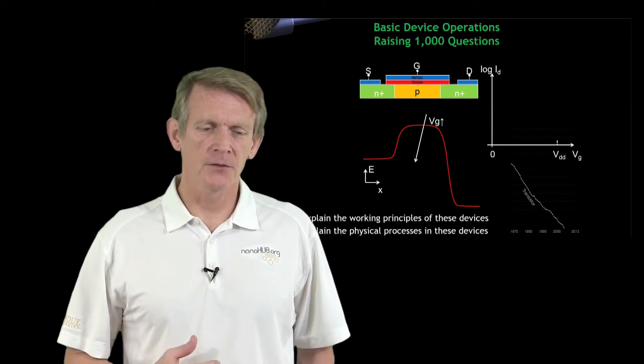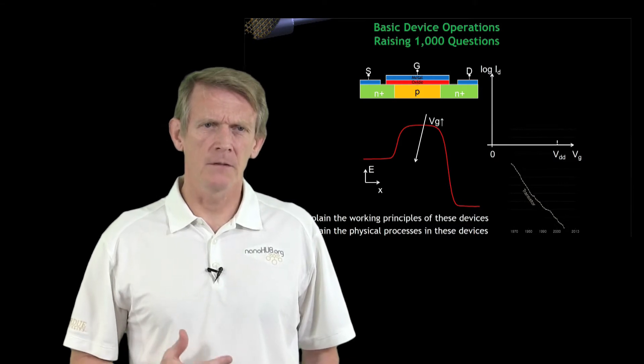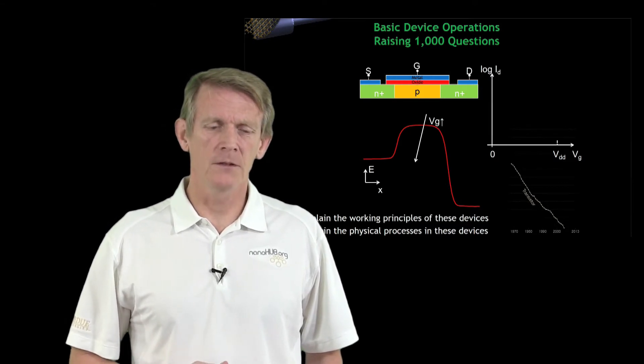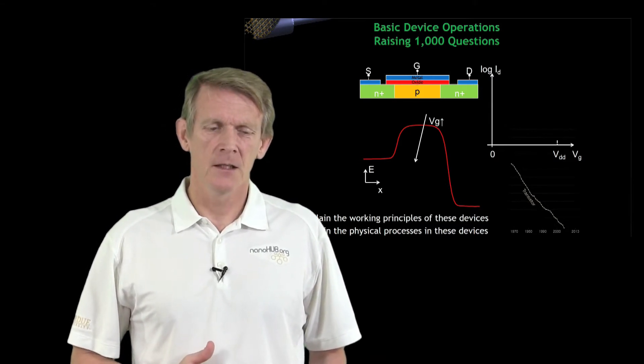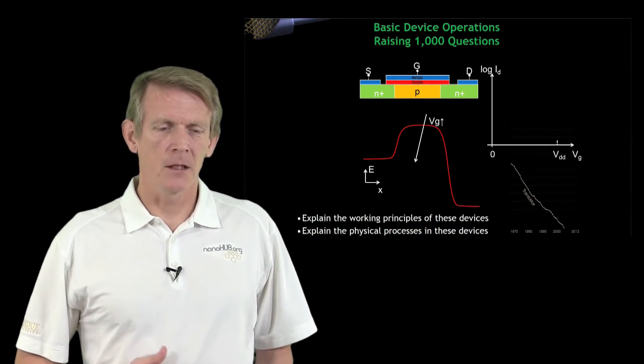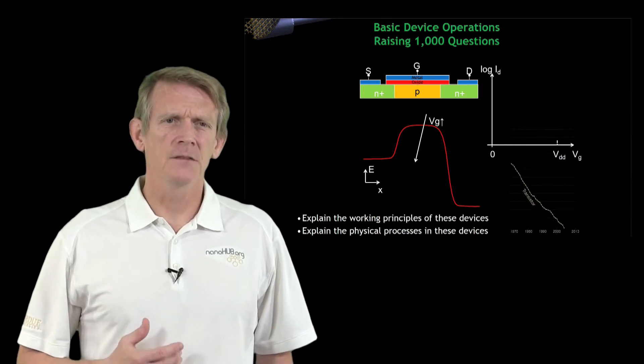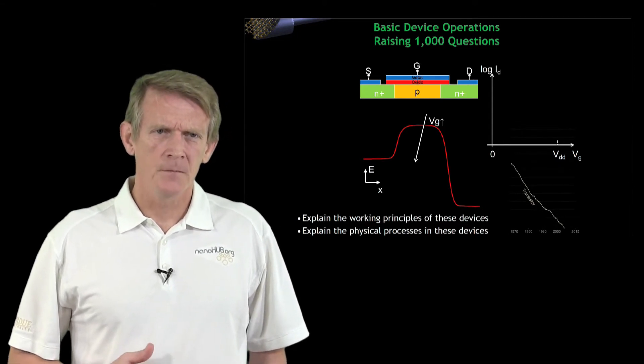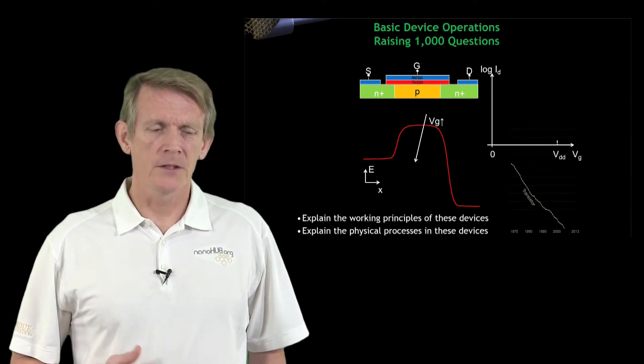Let me start from this transistor. It has a structure to it. Here's a typical example of a pictogram of a two-dimensional device. It has on the left a source, on the right a drain, and in the middle a gate. You can think of the gate as a valve that can open and close a channel.